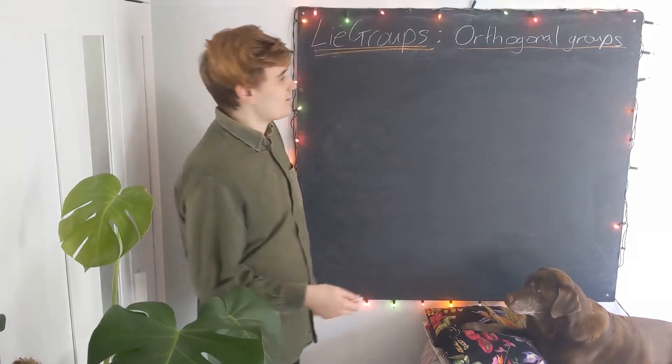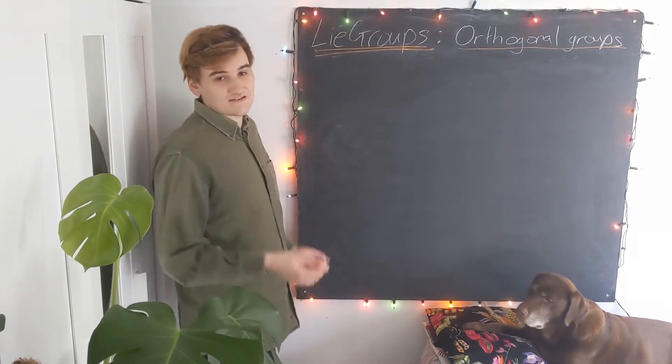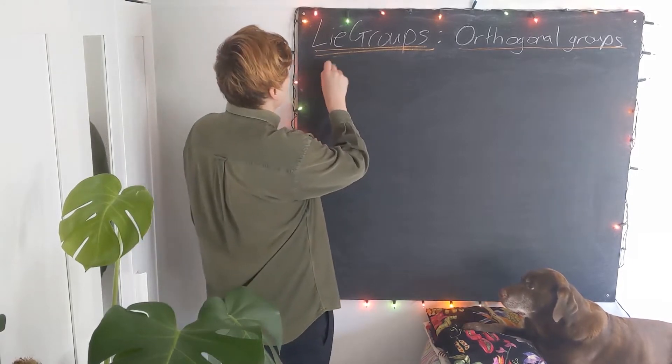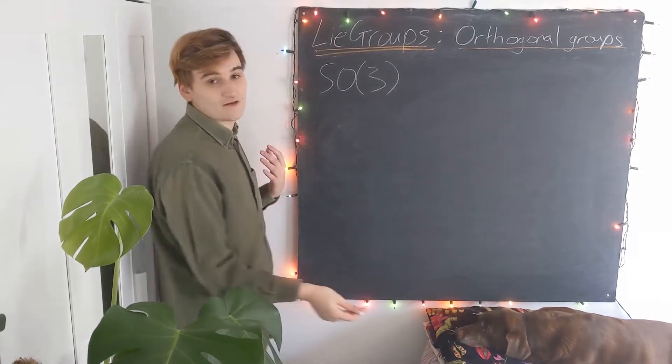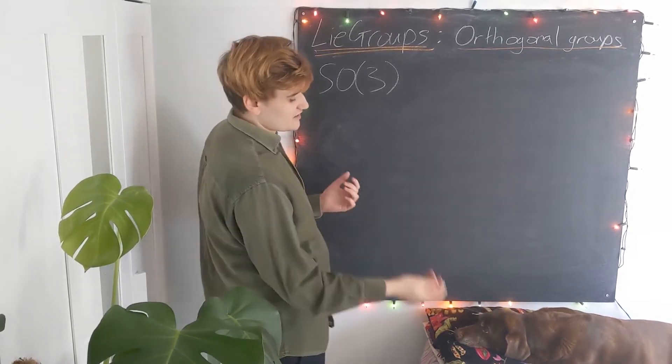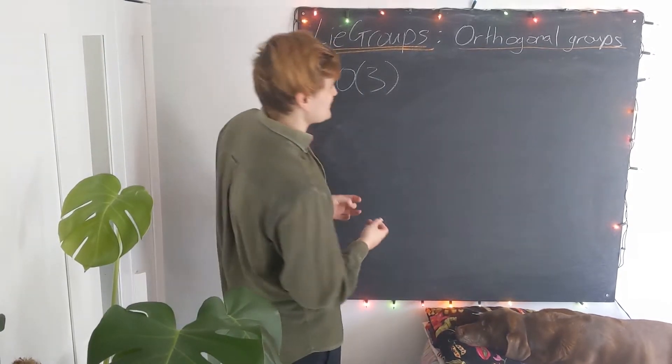Now I've briefly introduced you to the idea of Lie groups and we've seen a simple example, which was SO2. Let's take it up and talk about SO3. I'm always going to assume we're working with a special case — restricting to our determinant being positive and equal to plus one. SO2 is essentially the group that deals with rotations in the two-dimensional plane, and now SO3 is going to be the rotation group in three-dimensional space. I'm not going to talk too much about the matrix representations — it's basically identical to SO2.